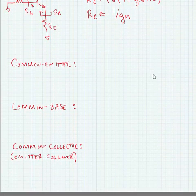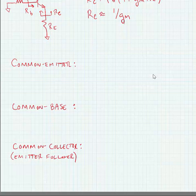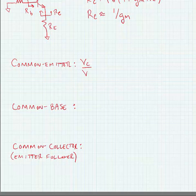Much like the MOS transistor, the common emitter amplifier with a bipolar transistor is one where we take the output on the collector and the input on the base. This takes our generalized form of Gm times Rt.